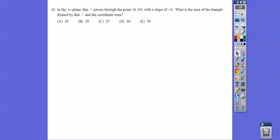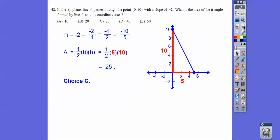In the XY plane, line L passes through 0, 10 with a slope of negative 2. What's the area of the triangle formed by the coordinate axes? Here's the Y axis, here's the X axis, so it's up here at 0, 10. The slope is negative 2 over 1, which is negative 4 over 2, which is the same as negative 10 over 5, and I went down 10 so I can get to the other axis. See this triangle? 1 half base times height, so we get 25.